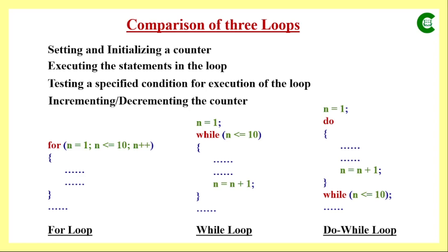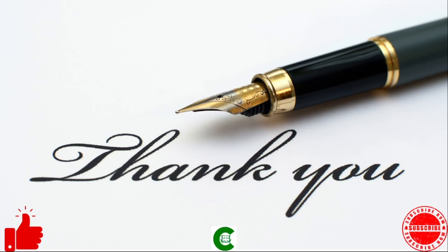This is the main difference between for, while, and do-while loops in C programs. The syntax has been covered and I hope you have understood the basic concept and the basic difference of these three loops in C programs. Thank you.